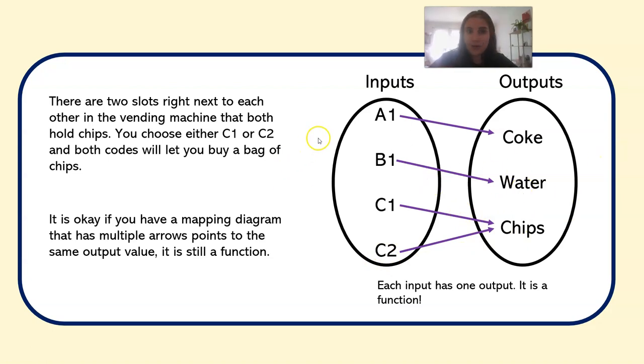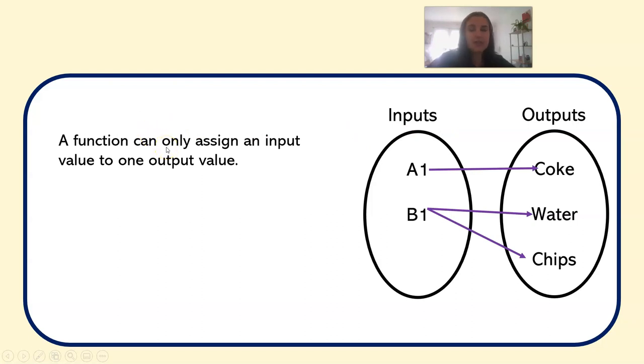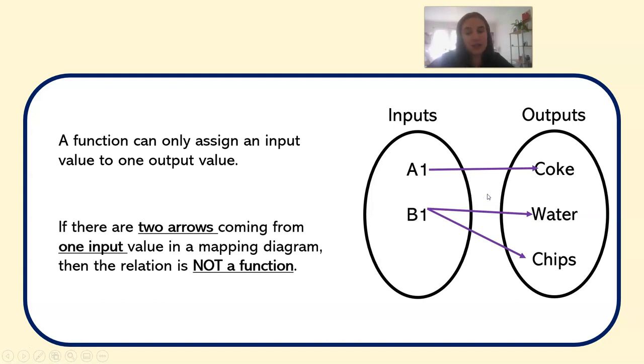Now, what does a NOT function look like? Let's look at this mapping diagram. What's wrong with it? So I have A1 goes to Coke and now my B1 goes to water and chips. So B1 has two outputs. I have one input that has two outputs. This goes against the definition of a function. A function can only assign an input value to one output. So it is not a function.